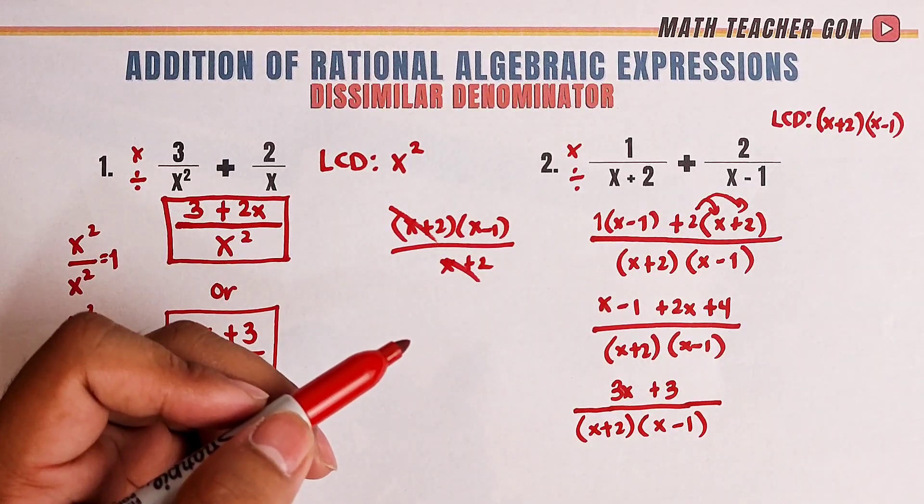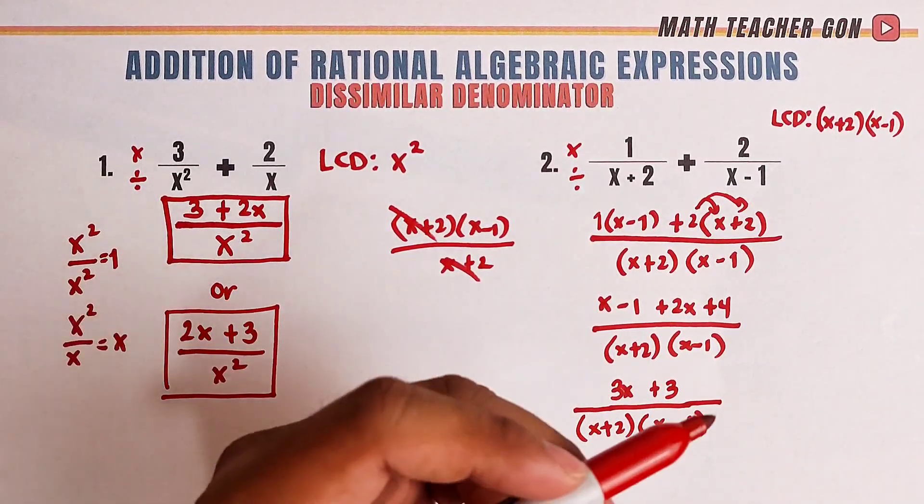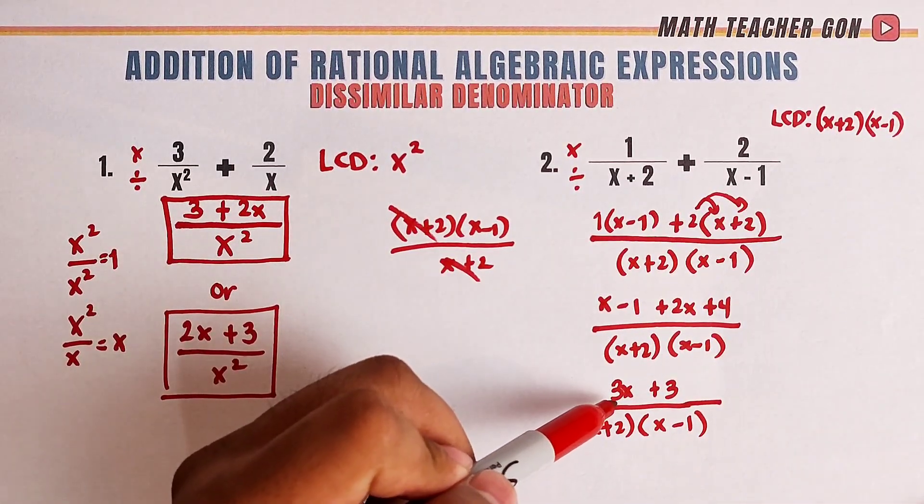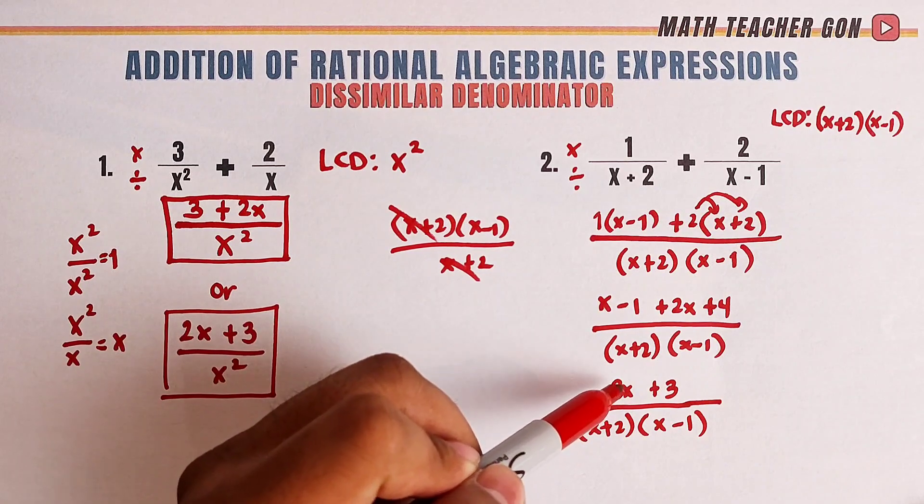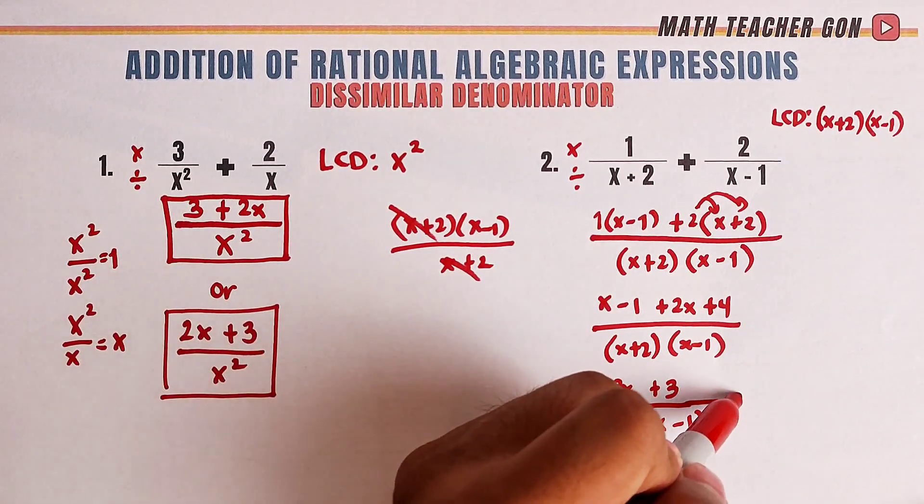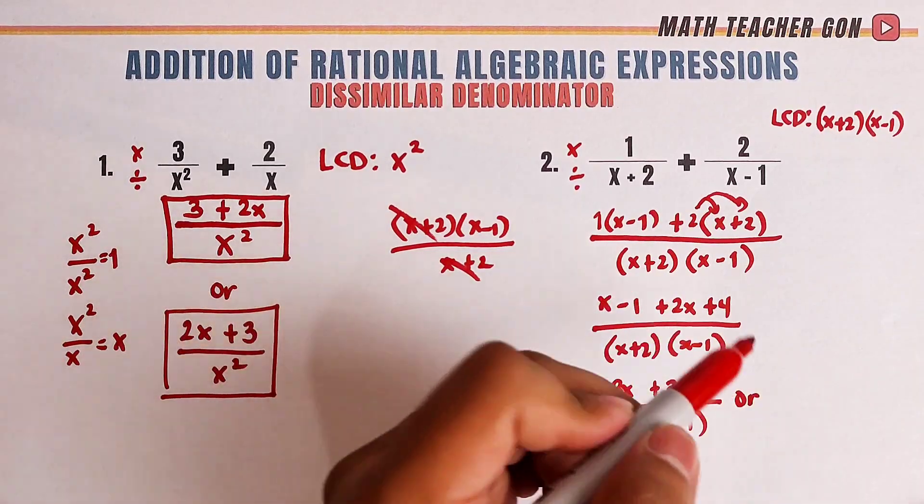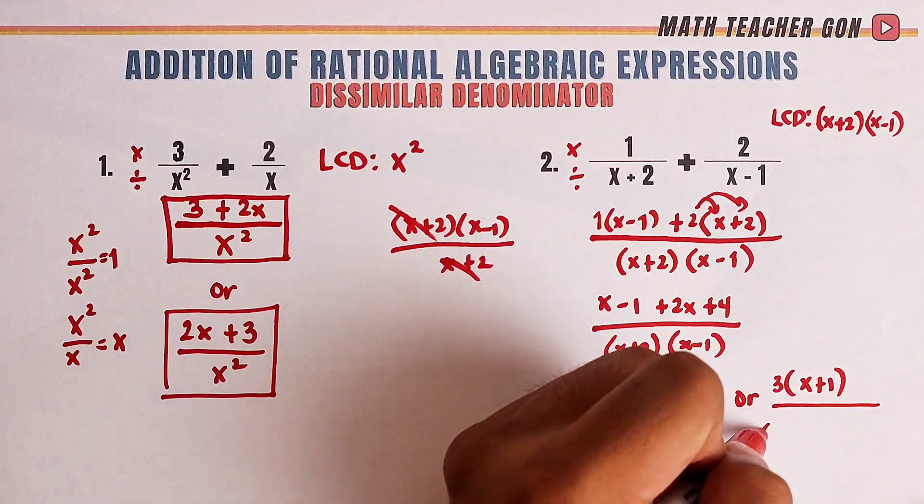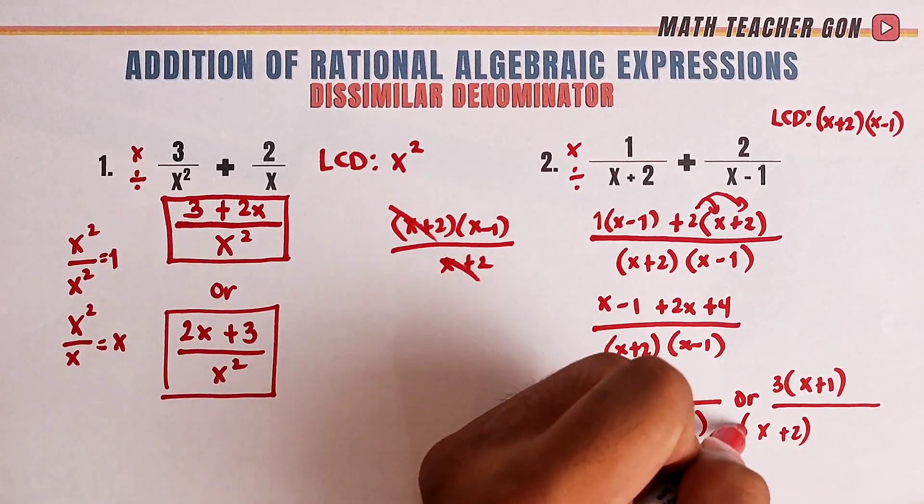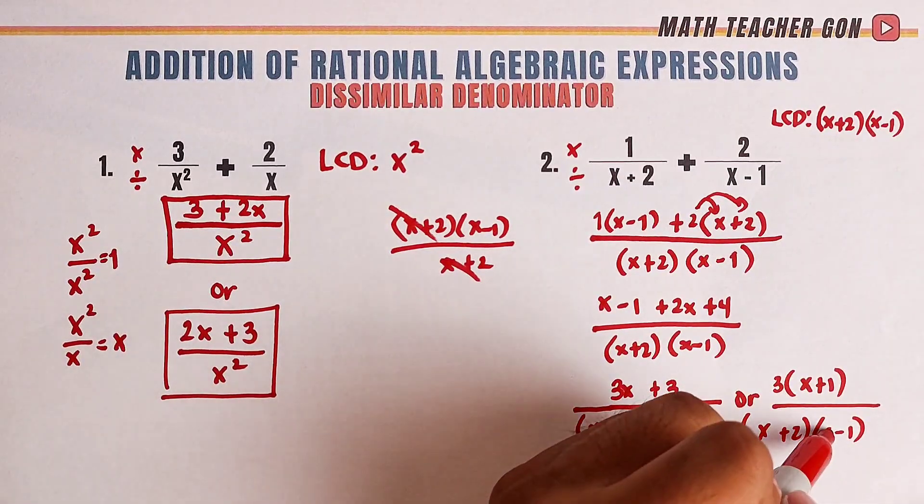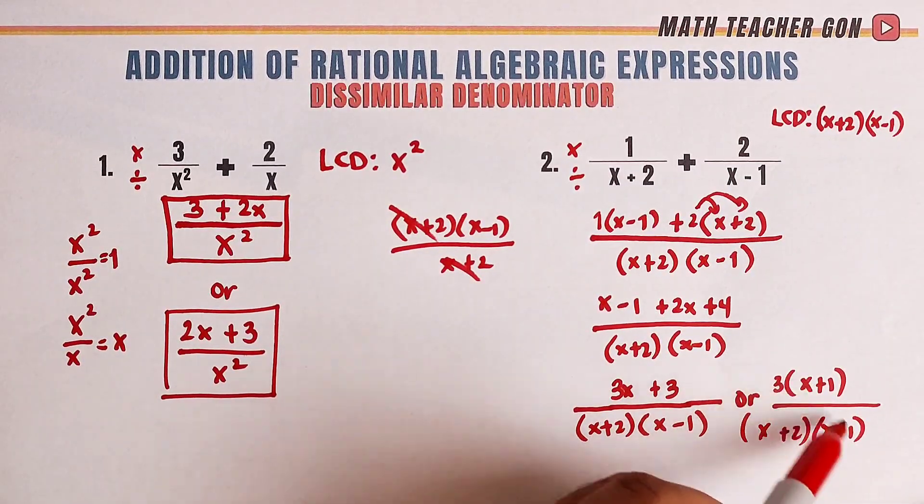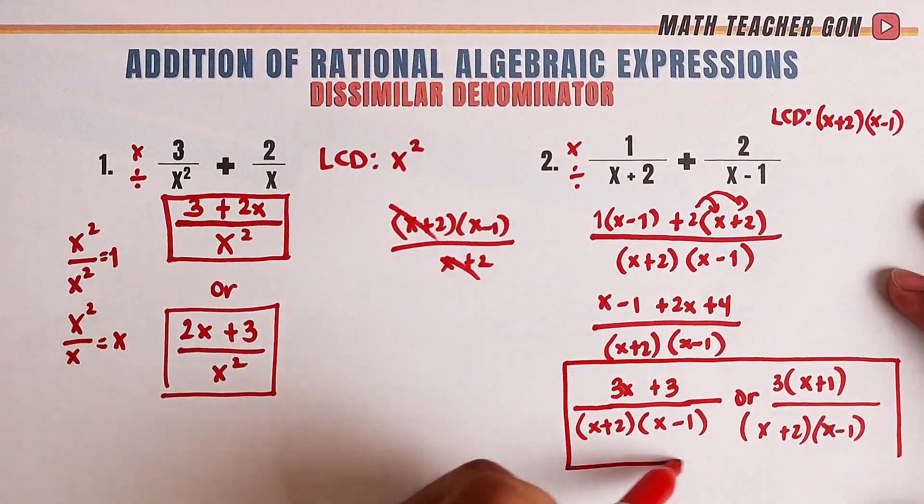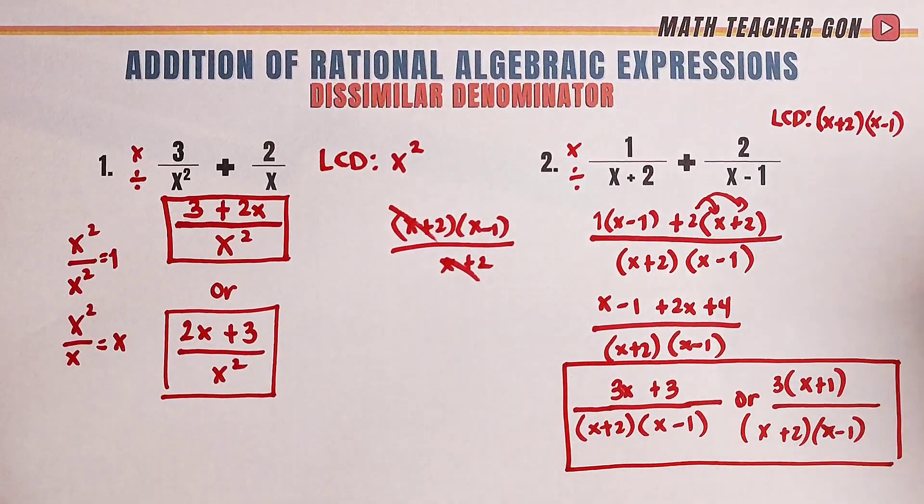Now, is there anything we can do to simplify this? Actually, we can't cancel out anything. But we can still factor out our 3x plus 3 to make it look better. Since 3 is common, we can make it 3 times x plus 1 over x plus 2 times x minus 1. You might think we can simplify these two, but no. They have different signs. So now, we can declare that these two different forms are the possible answers for item number 2.